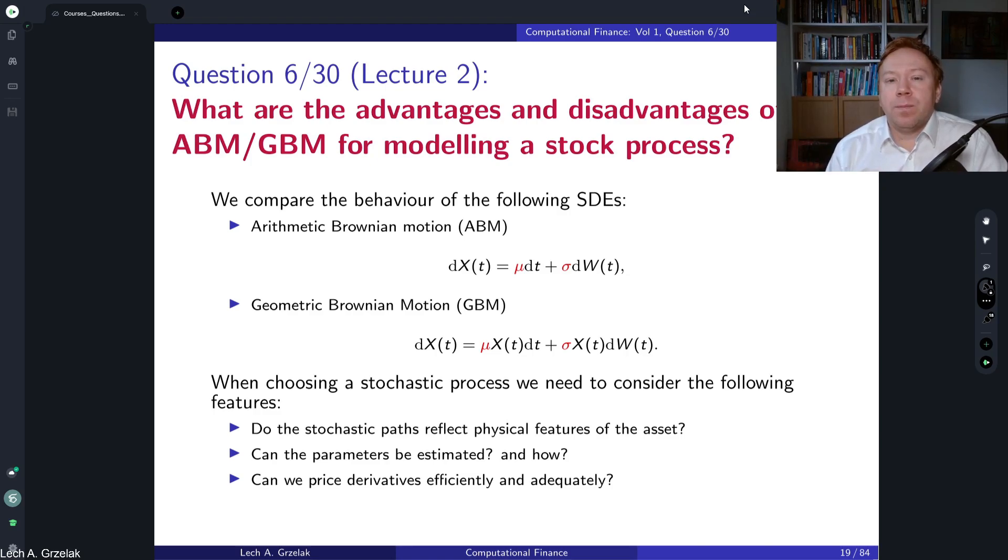However from the theoretical perspective we could say yes, in this scenario we are allowed to use geometric Brownian motion because we don't have enough information. We could just calibrate one parameter sigma to one instrument in the market and that should be enough.